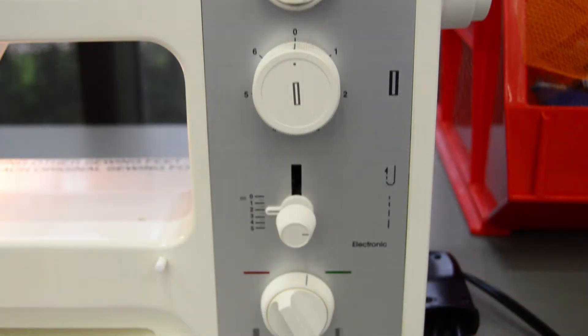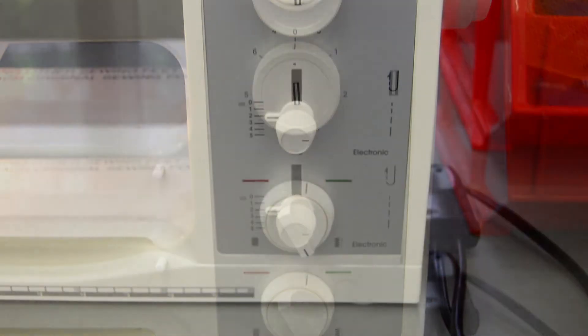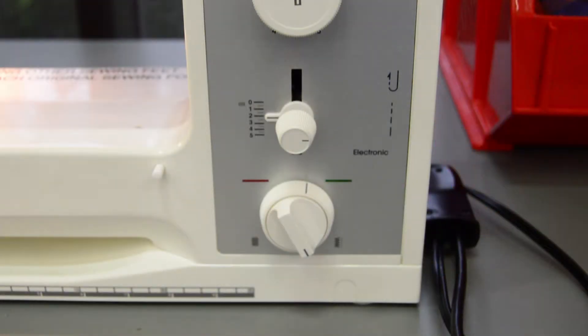The next knob controls the stitch length. The bottom knob's outer ring controls the selector for the red and green program modes on the top of the machine. The inner knob controls the ridge surface that grabs and moves the fabric while sewing.